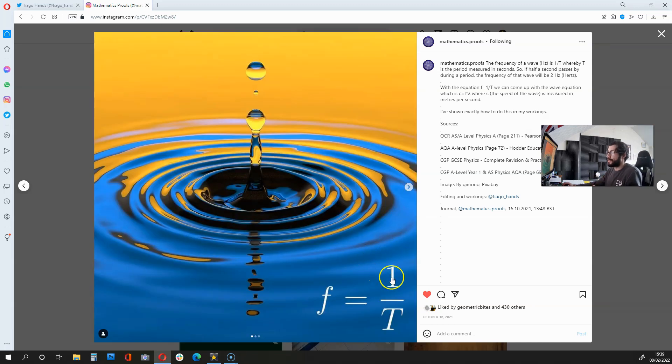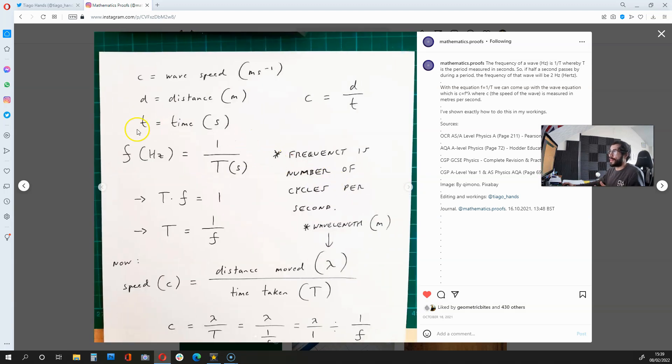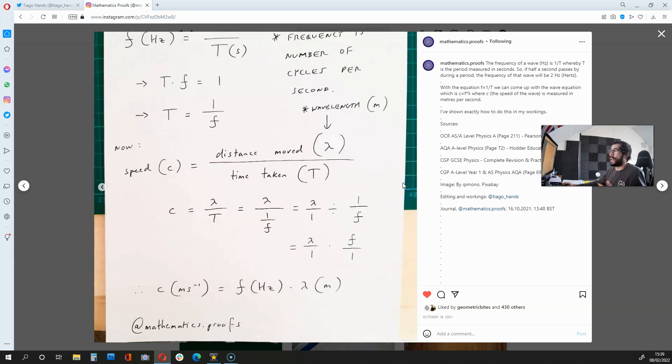So, that is f equals 1 over t, explained, and with this equation, and the speed equation, we were able to derive c equals f times lambda.